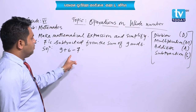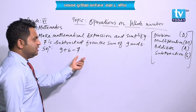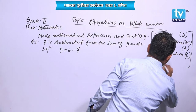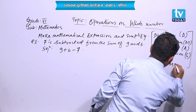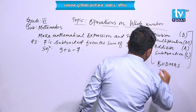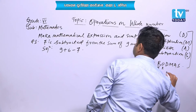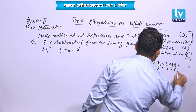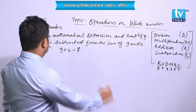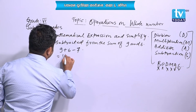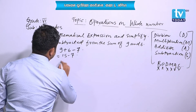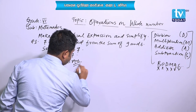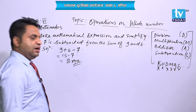Solution: according to the question, the sum of 9 and 6 means 9 plus 6, minus 7. There is no division, no multiplication. First we do addition: 9 plus 6 is 15. Then subtraction: 15 minus 7 is 8. That is the answer.